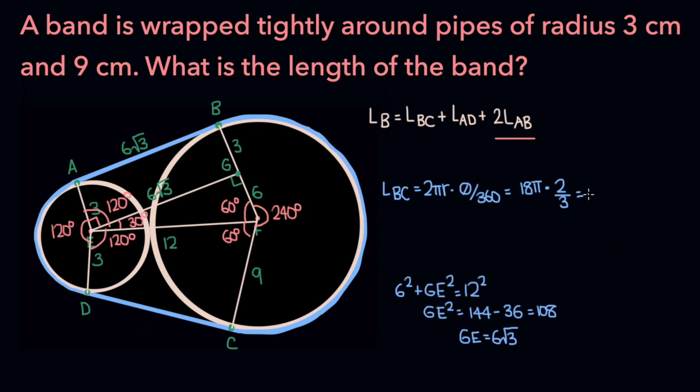240 over 360, which simplifies to 2 over 3, which is 12 pi. We can use the same formula to calculate the length of arc AD. The radius of the smaller pipe is 3 centimeters, so we're going to have 2 pi times 3, or 6 pi times 120 over 360, which is 1 third, and 6 pi over 3 is 2 pi.